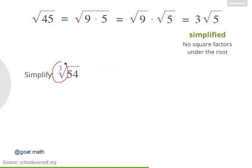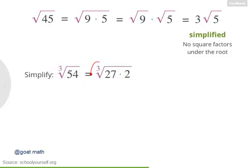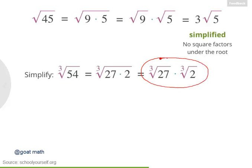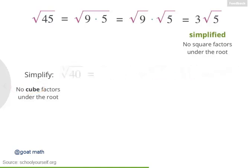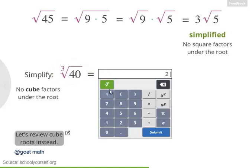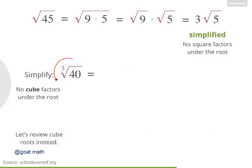You can also simplify cube roots and higher roots. For example, let's look at the cube root of 54. Since 54 equals 27 times 2, and because we're multiplying, we can distribute the root: the cube root of 27 times the cube root of 2. The cube root of 27 is 3, so the cube root of 54 simplifies to 3 times the cube root of 2. Just as simplifying square roots means having no square factors under the root, simplifying cube roots means having no cube factors under the root. For example, 40 equals 8 times 5, so the cube root of 40 equals 2 times the cube root of 5.